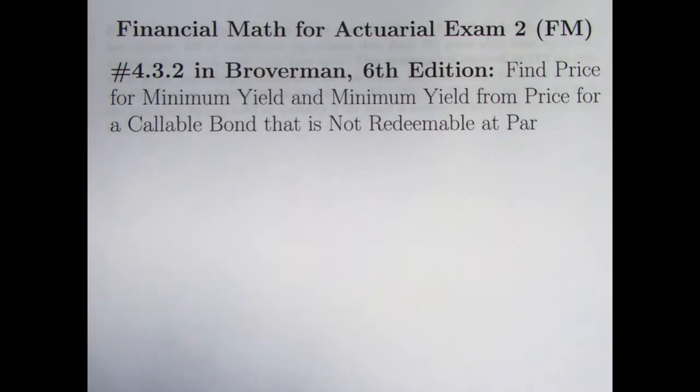Hi, this is my 118th video on Financial Math for Actuarial Exam 2. In the last video, number 117, we looked at problem 4.3.1 in Broverman, where we introduced the idea of a callable bond.